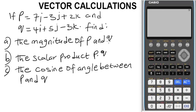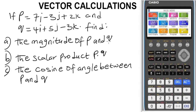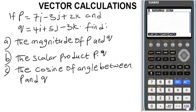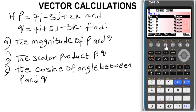Next, put the calculator in vector mode. To quickly do that, under the matrix option press F3 which takes you to the vector section. Press F3 and when it gets there, press the F6 button and it will change to vector mode. Now let's set the vector dimension.